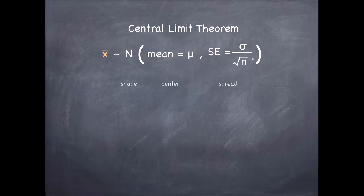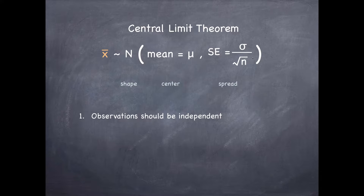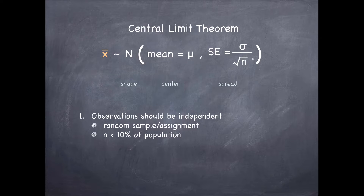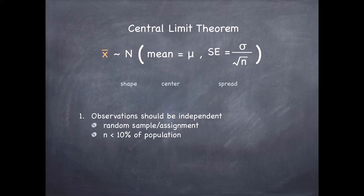This, of course, only holds as long as certain conditions hold. First, we need our observations to be independent — the observations within each sample need to be independent of each other with respect to the variable we're interested in. To ensure this, we could use random sampling or random assignment, depending on whether we're doing an observational study or an experiment. We also don't want our samples to be very huge. Larger samples are better in statistics, but we want an upper bound on sample size, because if you sample a huge chunk of your population, it's going to be very difficult to ensure independence between the observations.